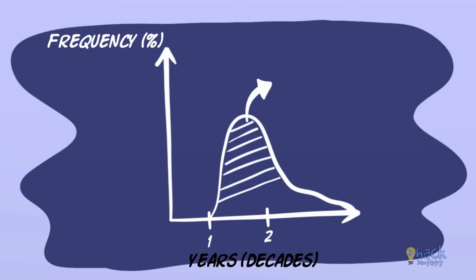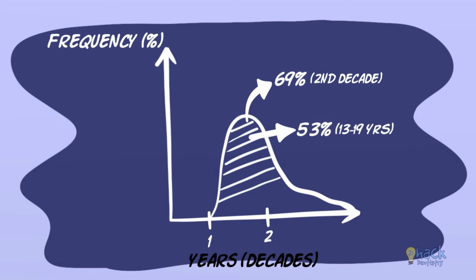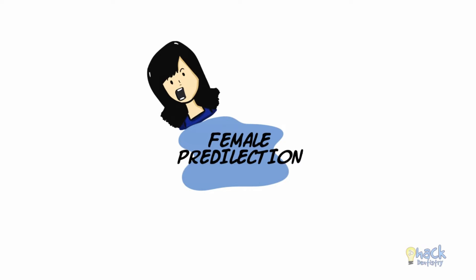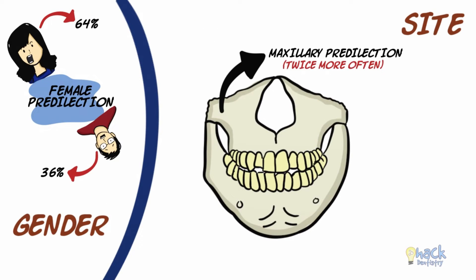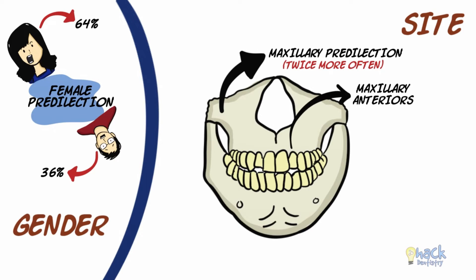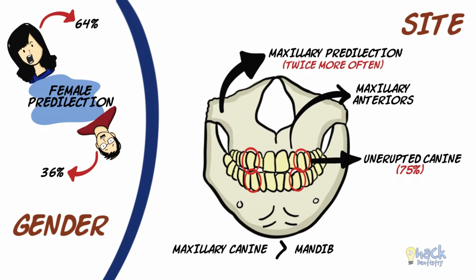Most AOTs occur in the second decade of life, with 53% of the lesions occurring within 13 to 19 years of age. There is a general female predilection with at least 64% of the tumours occurring in females compared to 36% in males. Its frequency in the maxilla is twice that of the mandible and has a predilection for the maxillary anteriors. It is reported that 75% or two-thirds of the cases are associated with an unerupted canine. AOT is also more commonly associated with a maxillary canine than its mandibular counterpart.